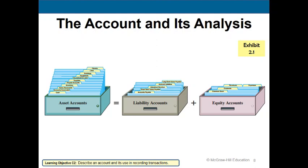Asset accounts differ from company to company, but there are commonalities. Every company will have a cash account, accounts receivable, possibly notes receivable, inventory (unless they're a service company), prepaid accounts, and supplies. Property, plant, and equipment such as buildings, equipment, and land, as well as intangible items like patents and trademarks are also common asset accounts.